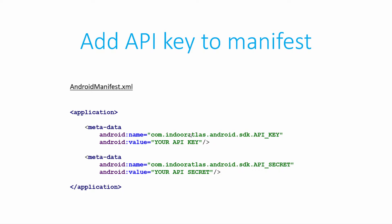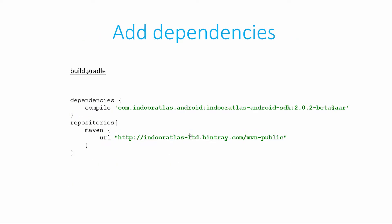Once you are done with adding the API key and the API secret, you need to add the dependencies for your project. Since you are using the Indoor Atlas API, you need to add the compile time dependency for the Indoor Atlas SDK 2.0 API. Along with that, you need to specify the repository from which Android Studio can get this dependency, and all of this needs to be specified in the build.gradle file of your application.